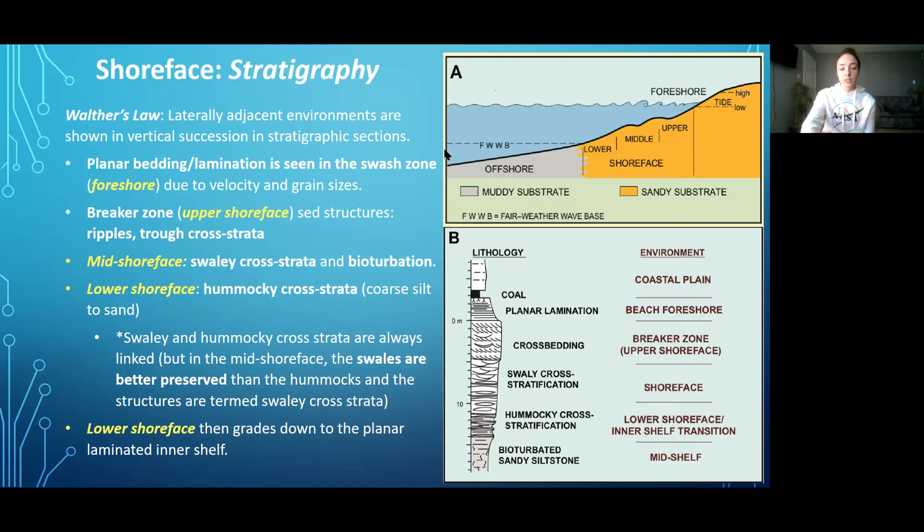This is why the lower, middle, and upper shoreface environments, which are adjacent to each other in real life, can be shown on a stratigraphic column in vertical succession in the rock record. Let's go through the stratigraphic column step by step, from the foreshore environment to the upper shoreface, to the middle shoreface, to the lower shoreface and offshore transition zone.